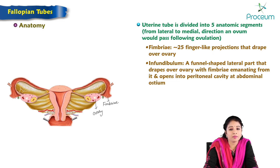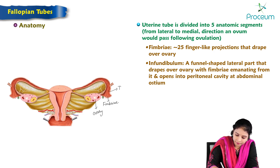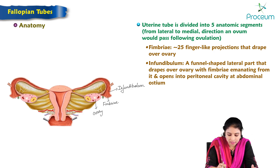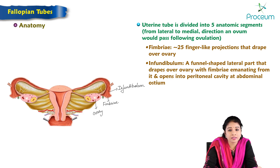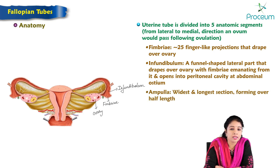The infundibulum opens into the peritoneal cavity at the abdominal ostium. Infundibulum means funnel-like, and it is the funnel-like broader area of the uterine tube where it drapes over the ovary with the fimbria. The next widened part is the ampulla, which is the widest and longest section, forming over half of the total length of the tube.